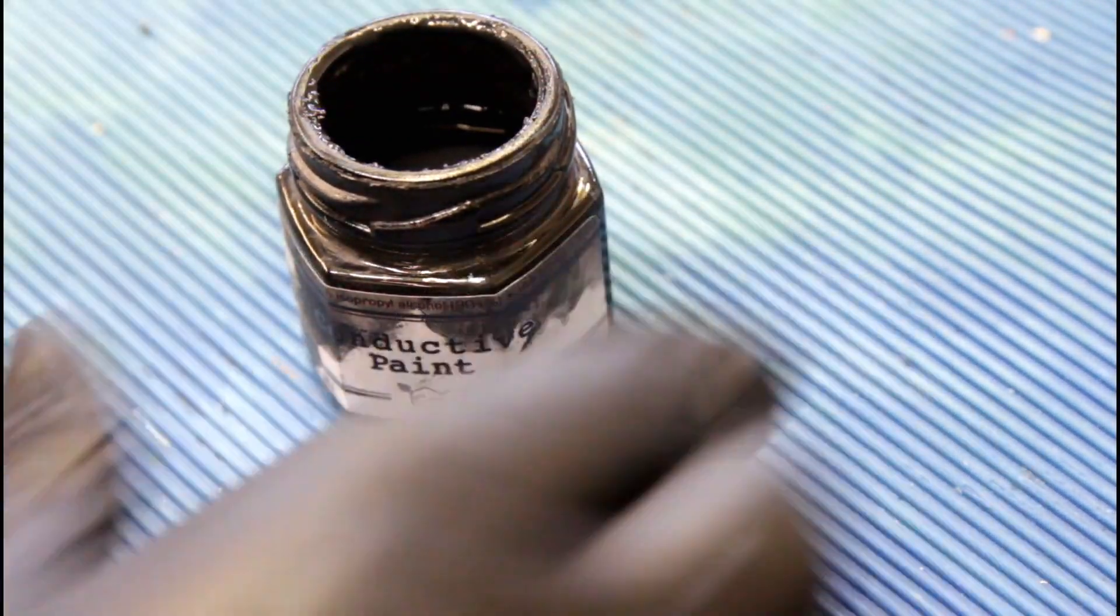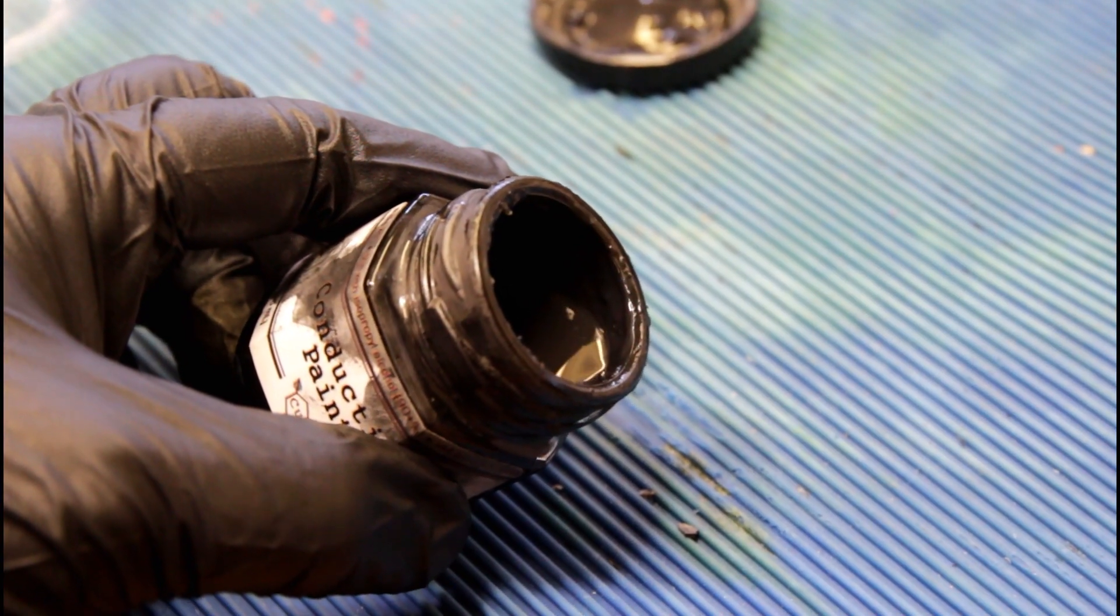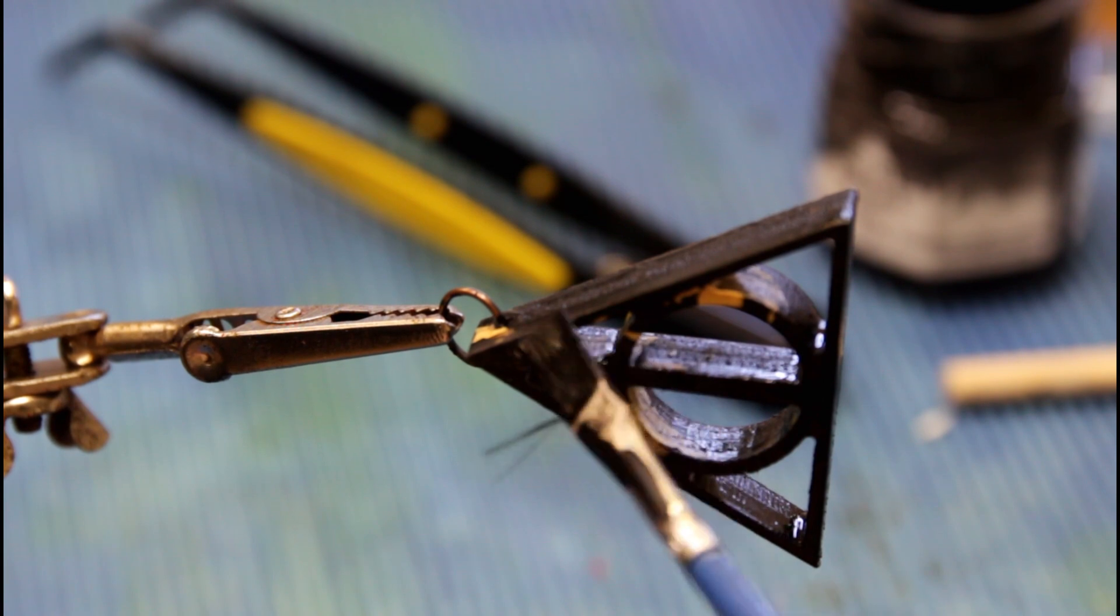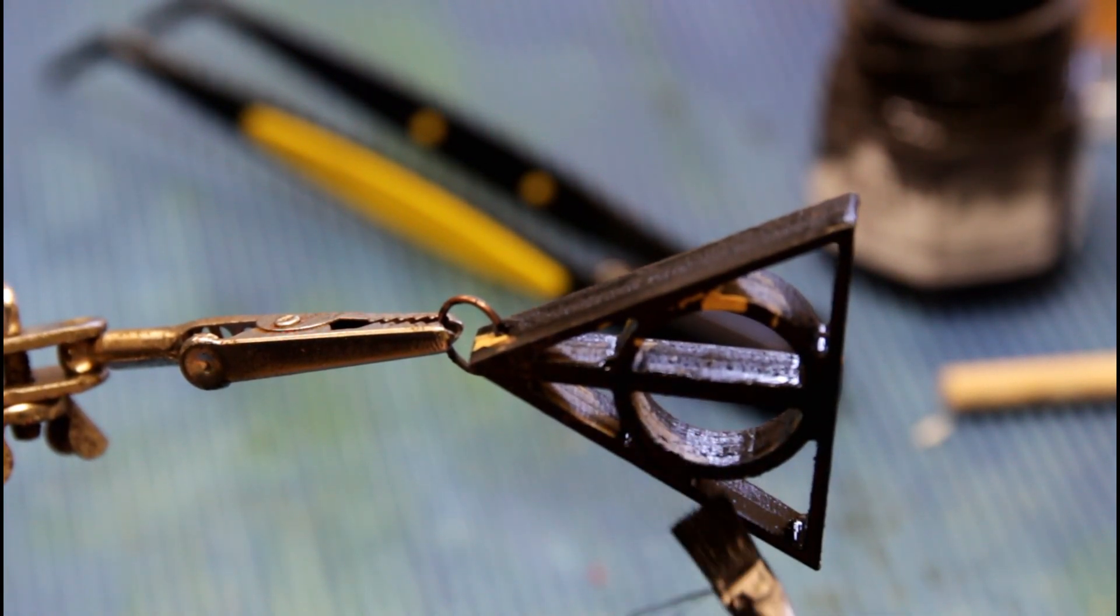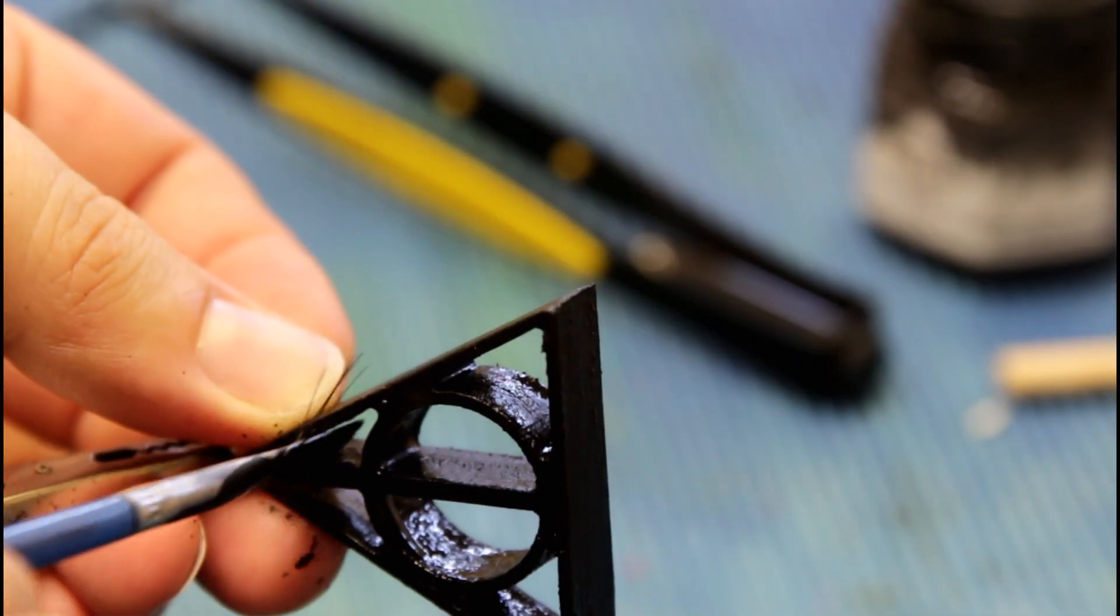Conductive paint is just what it sounds like—paint that carries an electrical current. It actually goes on really quickly because of how thin it is. It's nice with the wood, not as delicate as the leaf. Now I've got conductive paint on me.